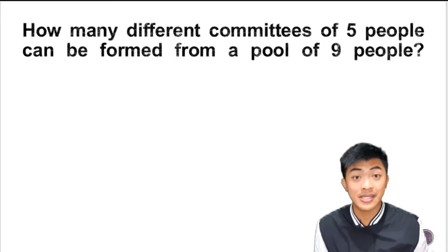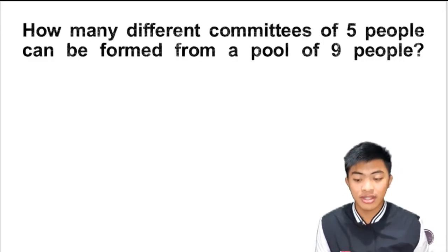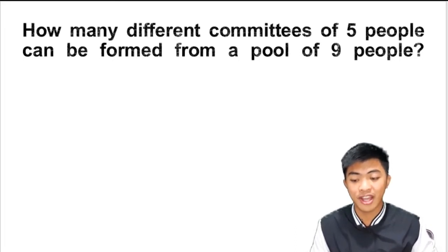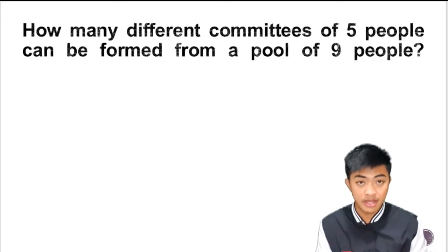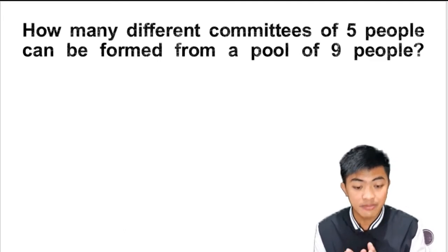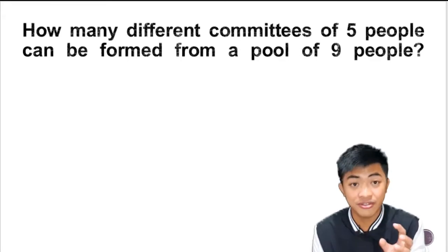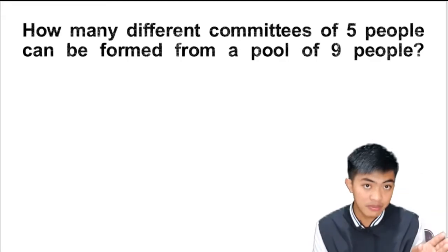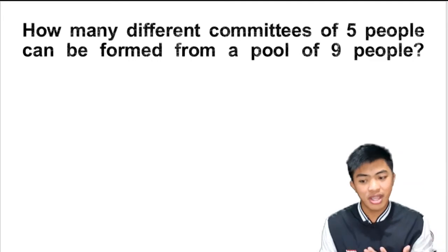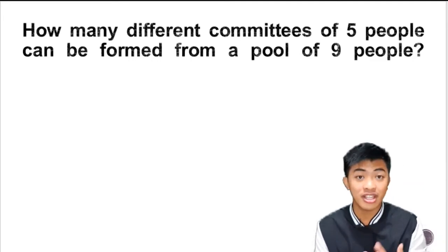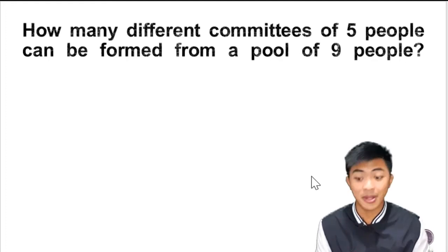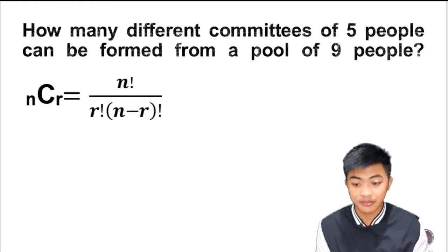Okay, so let's have sample problems. In this first problem, let's read: How many different committees of five people can be formed from a pool of nine people? So there are nine people and we are going to select five from those nine people. The question here is how many different selections, how many different committees can be formed? So yes, we're going to use the combination formula.